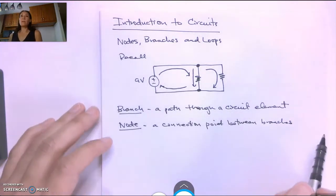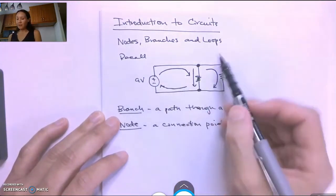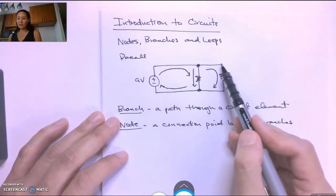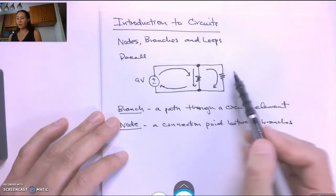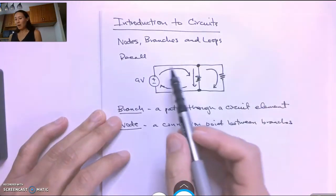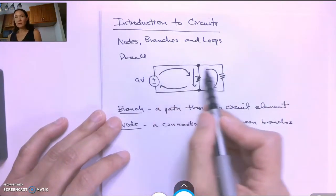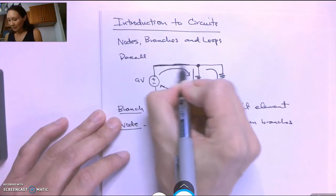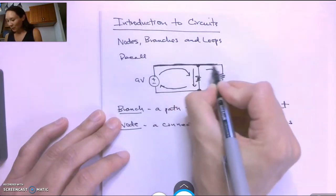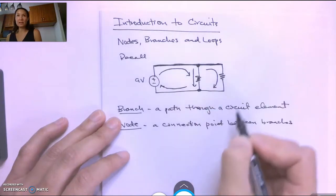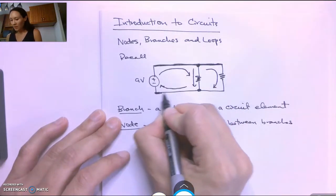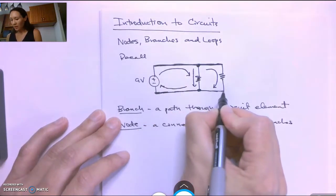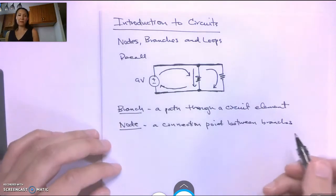Now something interesting about nodes is that it looks like this point and this point in my schematic are geographically different points. But you have to keep in mind that this is a wire so that means connectively speaking this is actually all the same point, this is all the same node. The same thing down here, this is also all the same node.